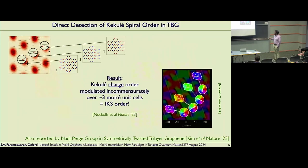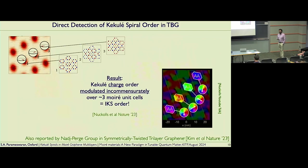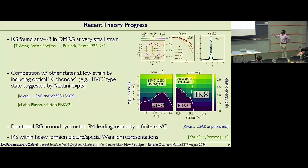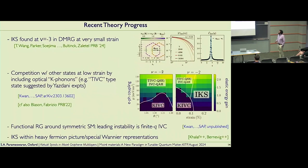Quite dramatically — Ali talked about this work at Aspen about a year ago, and more or less in the next talk, Stefan's group pointed out that they saw something very similar in symmetrically twisted trilayer graphene. So it's a nice confirmation that this IKS order is also present in another moiré system. Let me just summarize some recent theory progress: Mike Zaletel, Nick Bultink, and others worked quite hard and found IKS at ν=−3 using DMRG at very small strain. For those tempted to try this yourselves, I encourage you to look at the bond dimension they needed and then reconsider.